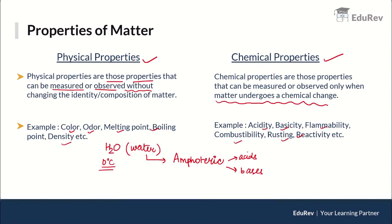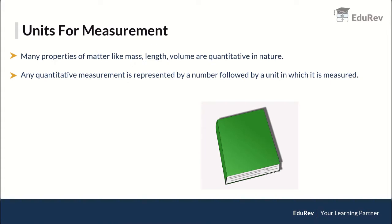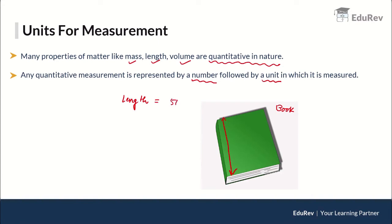Many properties of matter, like mass, length, and volume, are quantitative in nature — meaning you can estimate how many there are. Any quantitative measurement is represented by a number followed by a unit. For example, suppose I measure this book and its length is 50 centimeters.